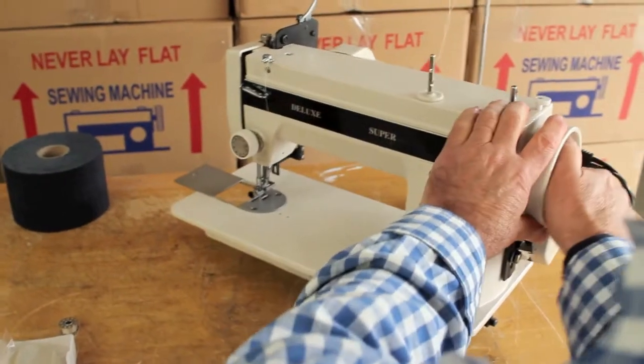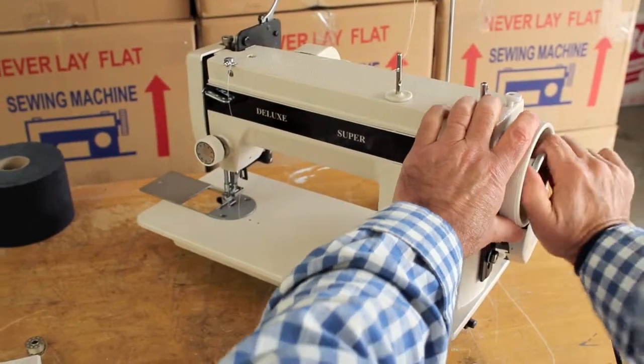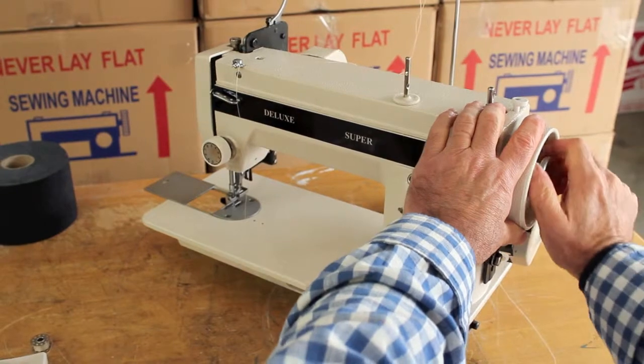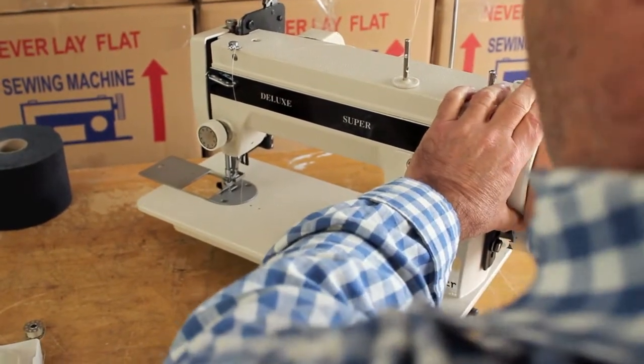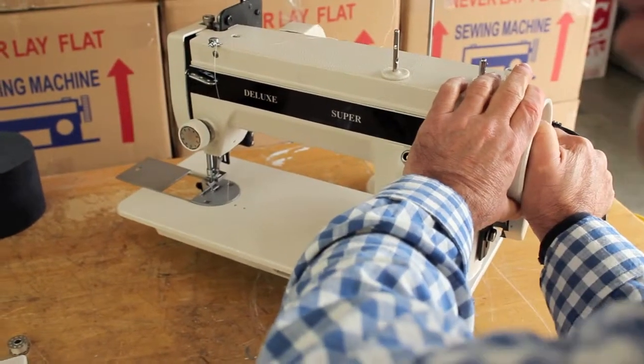You want to make sure that the clutch that you loosen to wind the bobbin, make sure you tighten it again and also give it as much tightness as you can. You want to tighten it really firm for regular sewing.